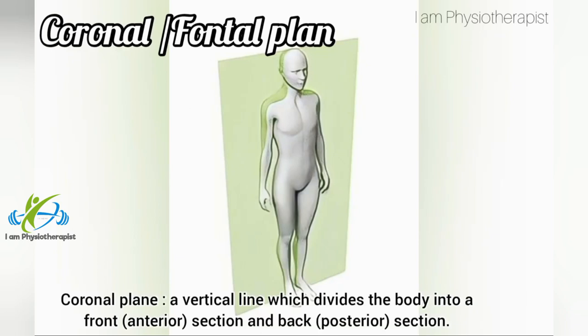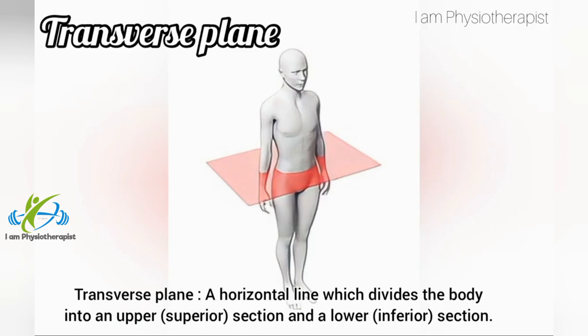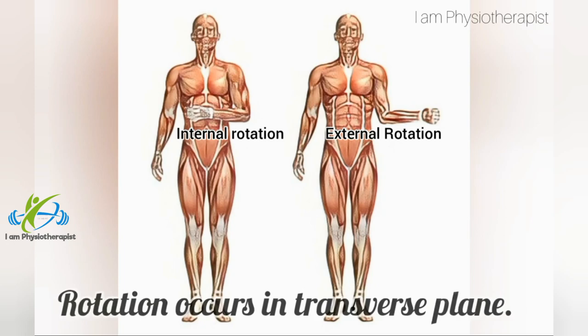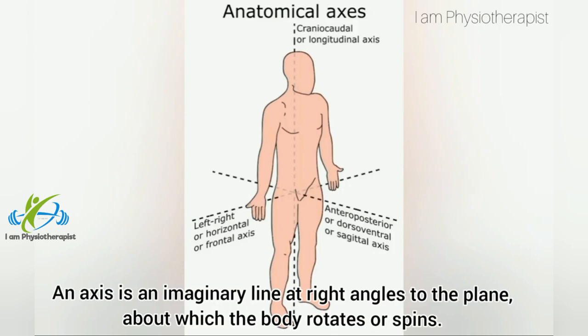The coronal plane is a vertical line which divides the body into a front (anterior) section and back (posterior) section; abduction and adduction movements occur in the coronal plane. The transverse plane is a horizontal line which divides the body into an upper (superior) section and a lower (inferior) section; rotation occurs in the transverse plane.